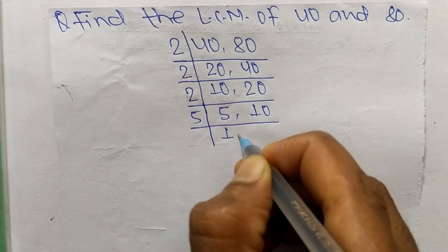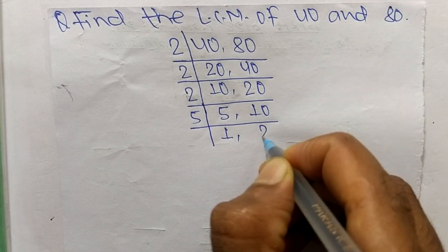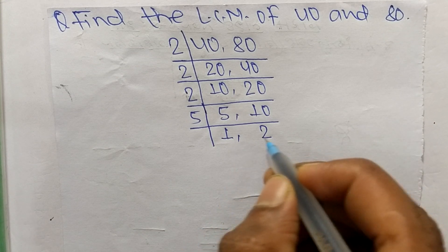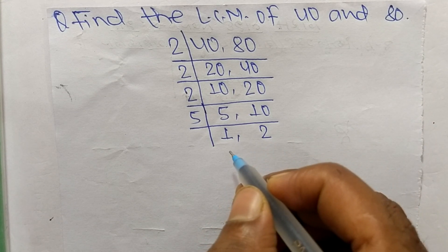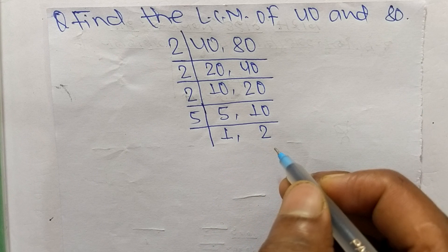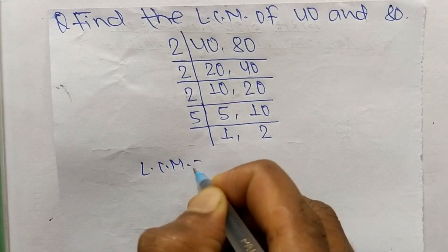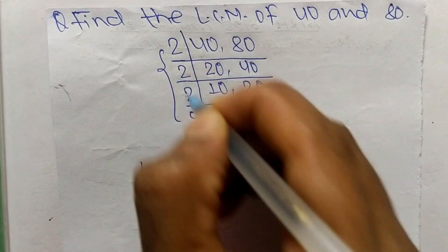At last we have 1 and 2 which are not exactly divisible by the same number. So its LCM is equal to, from this part we have 2 times 2 times 2 times 5.